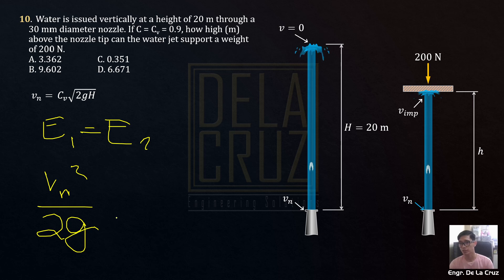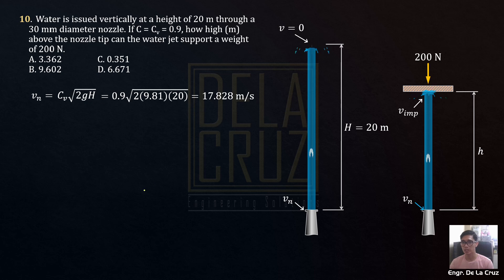If this is our datum, the energy here, energy 1 equal to energy 2. The energy here is VN squared over 2G. If that's our datum, we have no head. Of course, open space, we have no pressure. So we have no potential energy head. This is our datum. And equal to energy at 2. So zero is our velocity head. And our potential head is the H, plus H. Cross-multiplying that one, you will get square root of 2GH. And multiply that one by coefficient of velocity to become actual velocity. Substitute the value CV 0.9, square root of 2 times gravity, 9.81 meters per square second. And the height is 20 meters. Let's get the velocity at the nozzle.